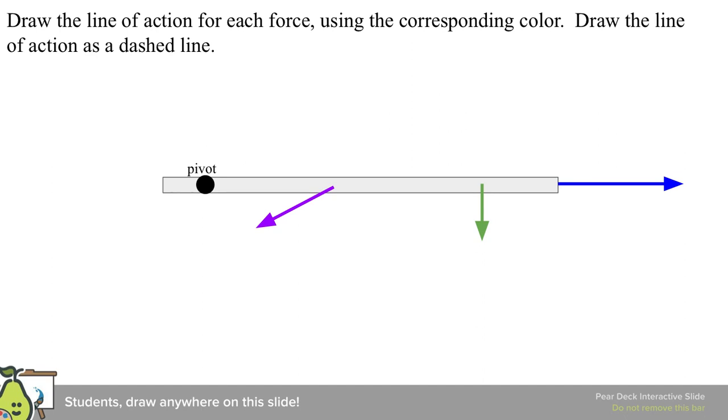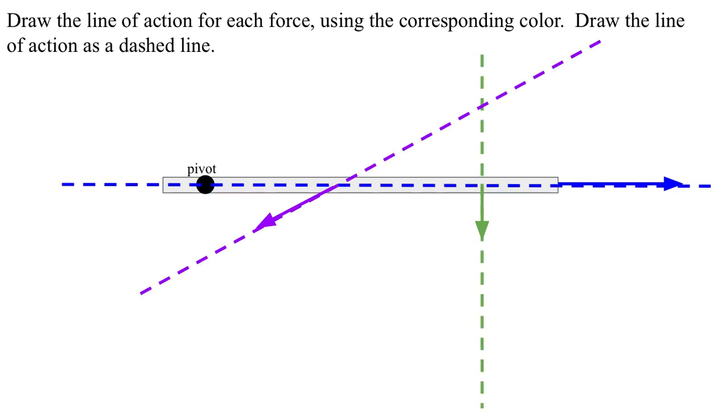So here we say draw the line of action for each of these distinct forces using dashed lines for the, using our usual convention here. So we'll do, let's say, the purple one. It means extend the force backward and forward in space. The green one would be a horizontal line. And the blue one would be a horizontal line. So those are our lines of action for these forces. Drawn more clearly, we have something like this.